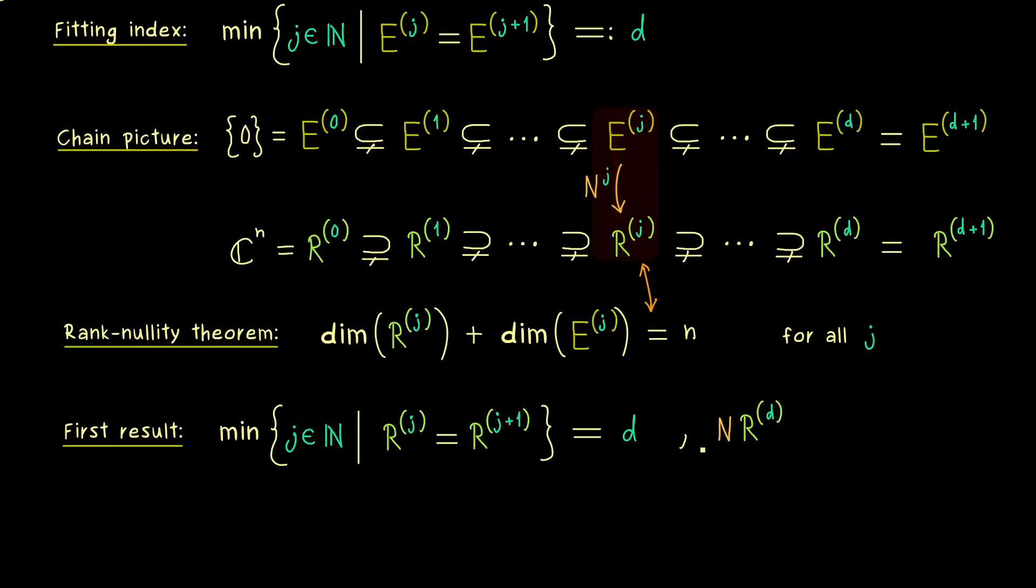Namely, if you apply N to each element of R^d, what comes out is the whole set R^(d+1). This follows from the definition, because R^(d+1) can be written as N to the power d plus 1 applied to any vector x in C^n. And there you see, if we do it for R^d and apply one N from the left, we get the whole set on the right-hand side. However, now the good thing is that this set on the right-hand side is actually R^d again. So at this point we can use the result from before.